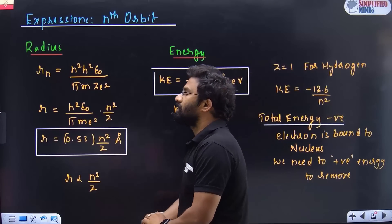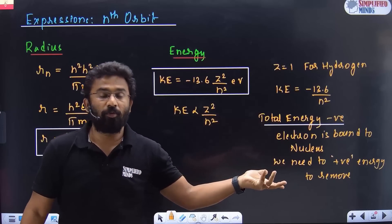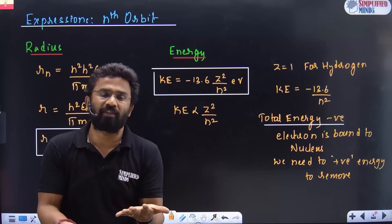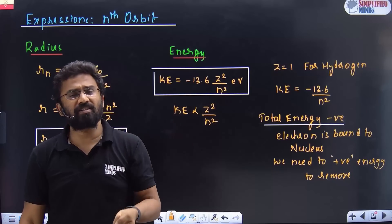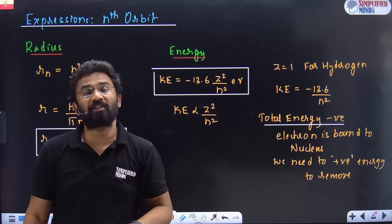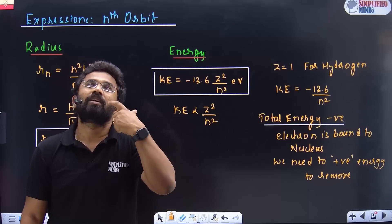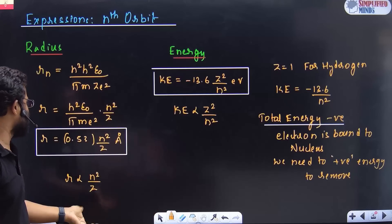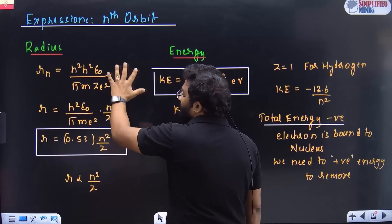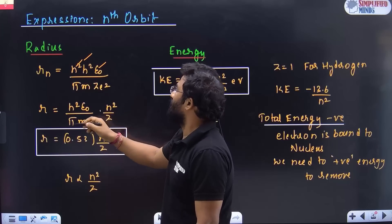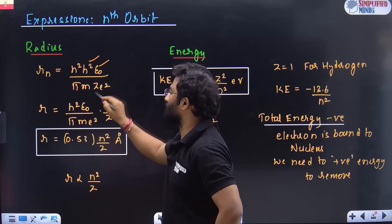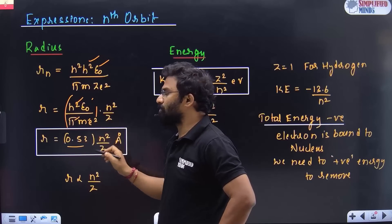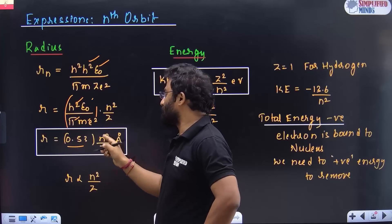Now the expressions for the nth orbit. For hydrogen (Z = 1), you need to know the expression for radius, velocity, energy, kinetic energy, potential energy, and angular momentum, and how they depend on n. The radius formula is: Rn = 0.53 angstroms × n² / Z. All other values are constants; n is the principal quantum number. Substituting Planck's constant and other values, we get 0.53 angstroms as the result.